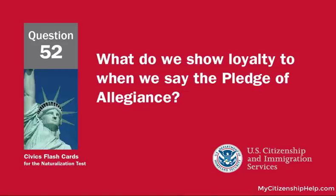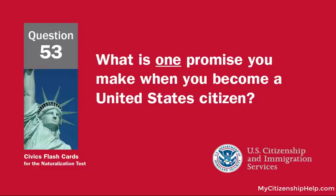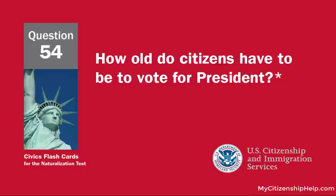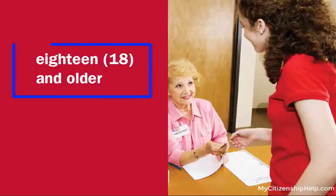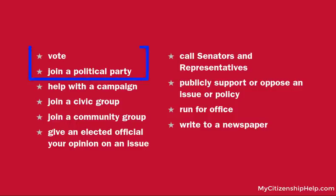What do we show loyalty to when we say the Pledge of Allegiance? The United States. What is one promise you make when you become a United States citizen? You give up loyalty to other countries. How old do citizens have to be to vote for president? 18 and older. What are two ways that Americans can participate in their democracy? Vote and join a political party.